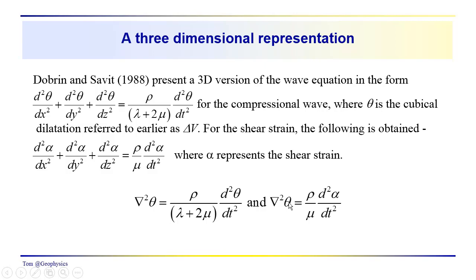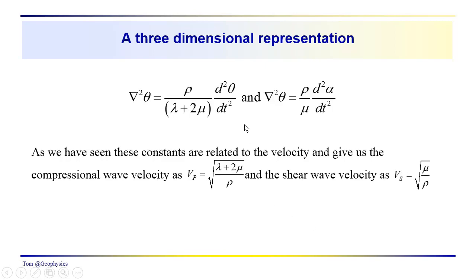this should be α—sorry about that—but this should be ∇²α = (ρ/μ)·d²α/dt². So we have this condensed representation. Again, apologies, this should be α. But just note we've come up with some additional representations of this velocity. In this particular case, we've done this for compressional waves and shear waves separately, and we've looked at the volume.